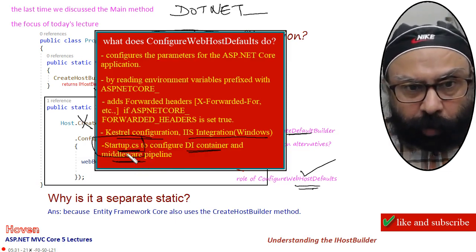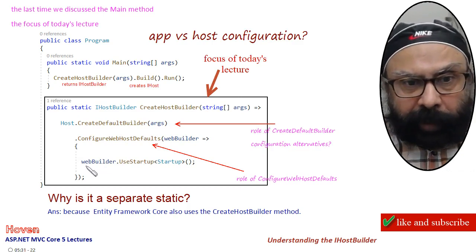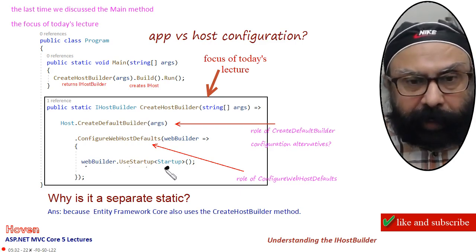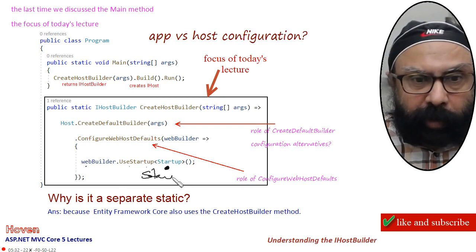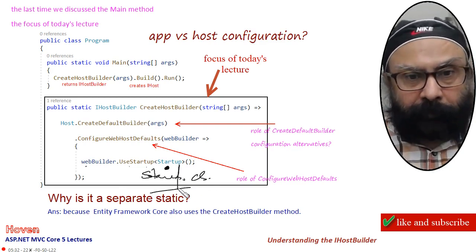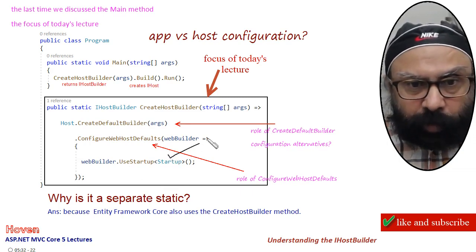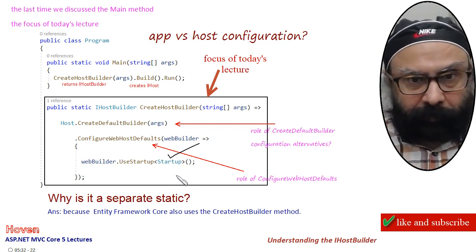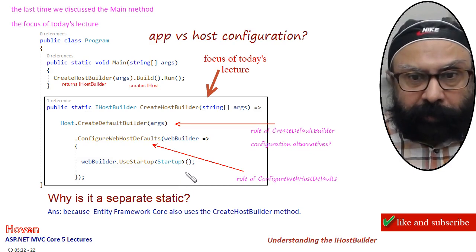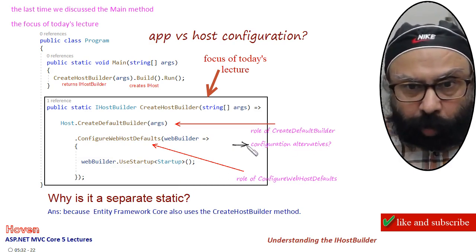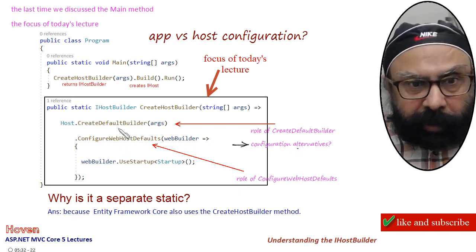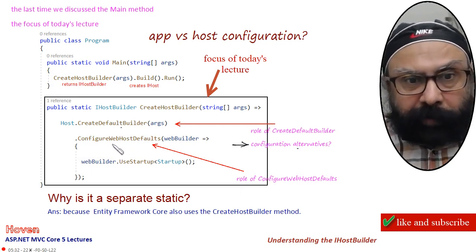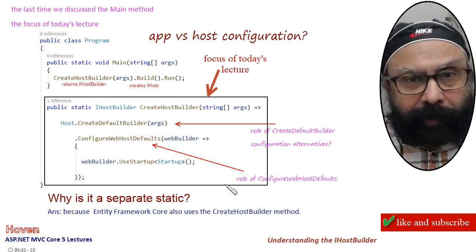Now how is this hooked? See, have a look here — webBuilder.UseStartup with the Startup class. And that way it uses this file to perform additional initial configuration. Now after this, just like we were able to fine-tune using alternatives for the default builder, we can fine-tune the configuration for web defaults also. So how that can be done?